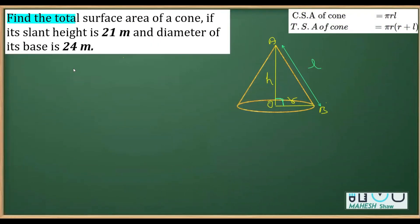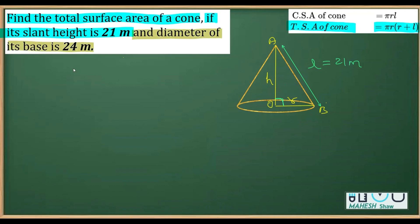In the third question, find the total surface area of a cone if the slant height is 21 meters and the diameter of the base is 24 meters. The formula is π r (r + l). The diameter is 24 m so radius r = half of 24 = 12 meters, and slant height l = 21 meters.